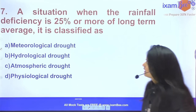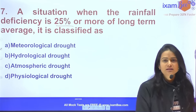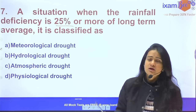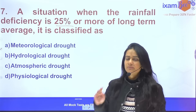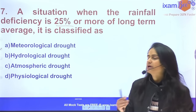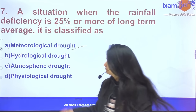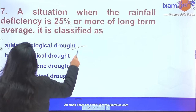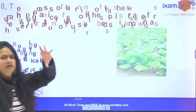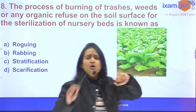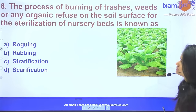Question 7: When the rainfall deficiency is 25% or more — for example, normal rainfall is 100mm but this year only 60mm — what is this condition known as? This is called meteorological drought. When this meteorological drought prevails, the water amount is reduced.